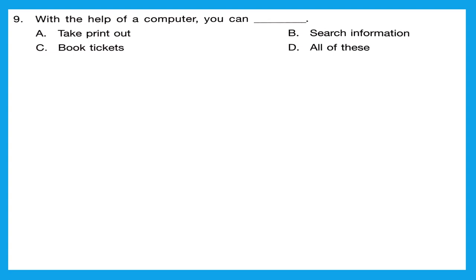Question 9: with the help of a computer, you can — option A, take printout; option B, search information; option C, book tickets; or option D, all of these. With a computer, we can take printout, search information on Google or any search engine, and book tickets. So the correct option is D, all of these.